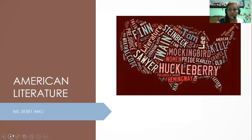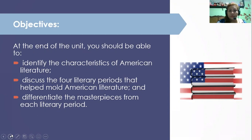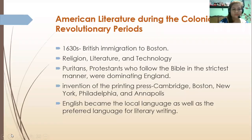Alright. Our lesson for today is about American literature. At the end of the unit or the lesson, you should be able to identify the characteristics of American literature, discuss the four literary periods that helped mold American literature, and differentiate the masterpieces from each of the literary periods.